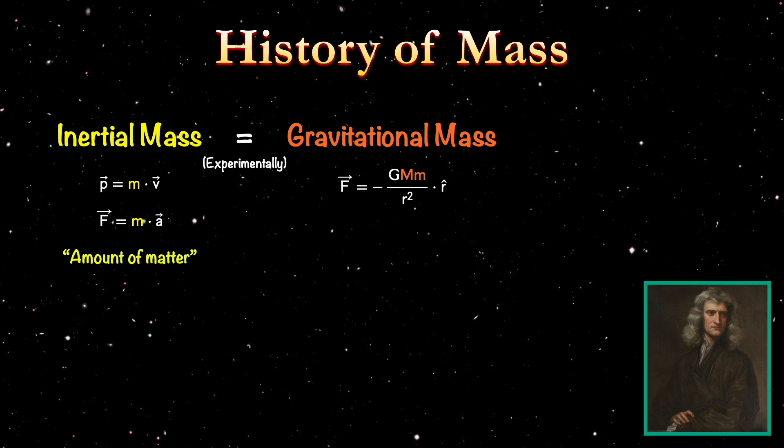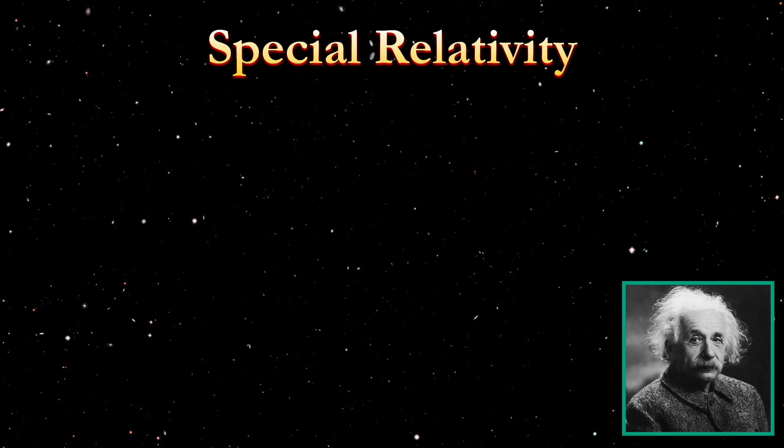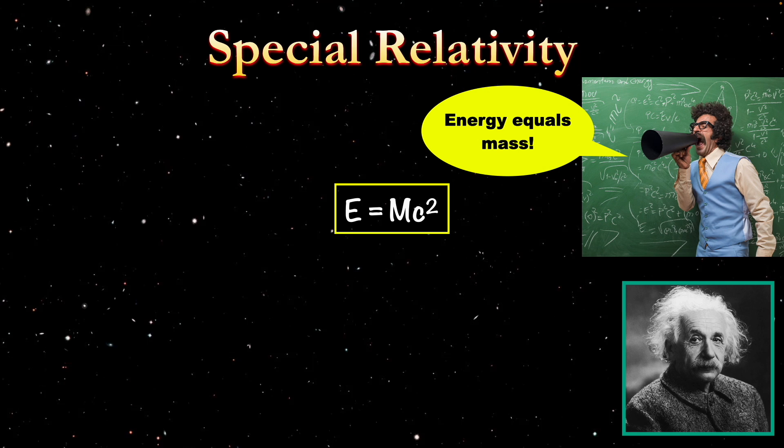Now this was the case in physics for a few hundred years after Newton, until Einstein came along and developed special relativity. This is where we get the famous equation E equals MC squared, or energy equals mass.